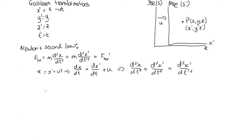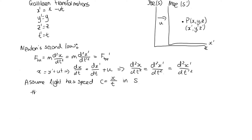However, at the beginning of the 20th century, some problems were starting to emerge with this picture, in particular with the speed of light. Maxwell had come up with some equations, and Maxwell's equations actually predicted that the speed of light should be the same in all reference frames. But if we use the Galilean transformations, that's just not true. Let's assume light has speed c, equal to displacement over time in frame S.